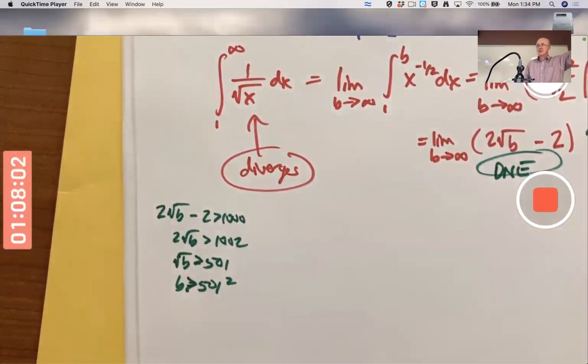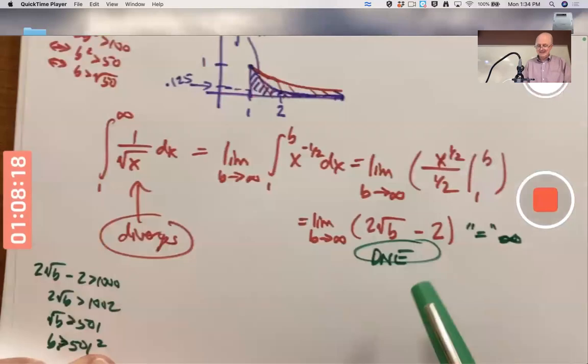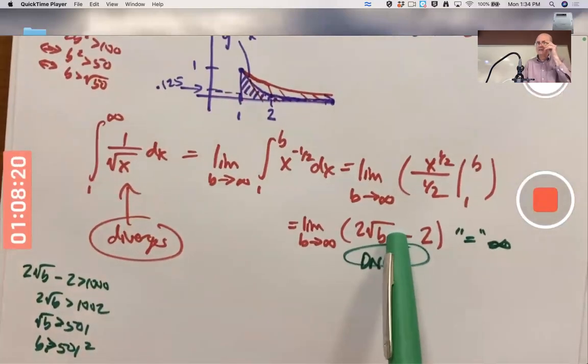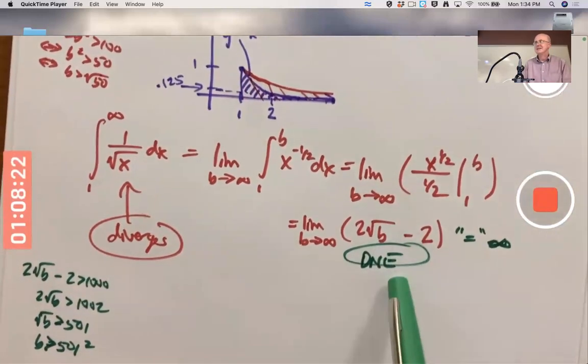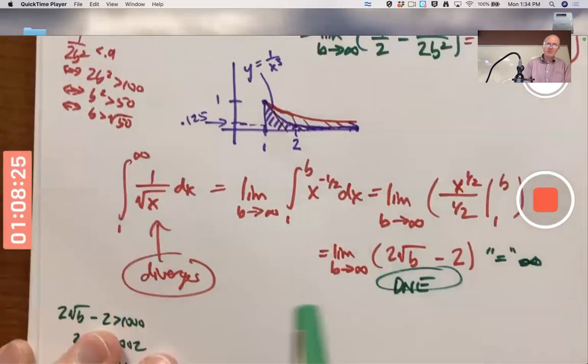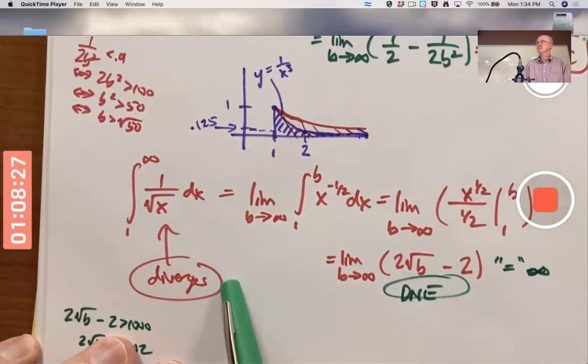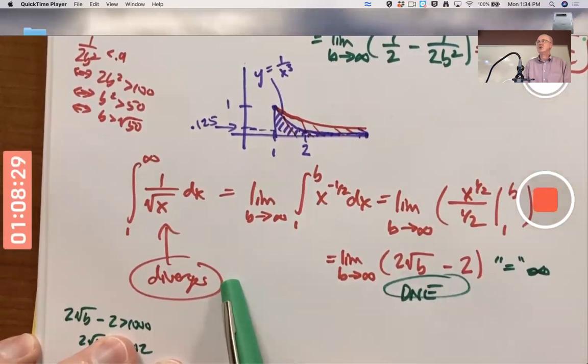1,000,000 is 10 to the 6th, the trillion is 10 to the 12th. You can make it higher than a Google 10 to the 100 by making b bigger than 10 to the 200, roughly speaking. This does not have any horizontal asymptotes. The limit does not exist. And that means the improper integral diverges or is divergent. Either way to say it is okay.